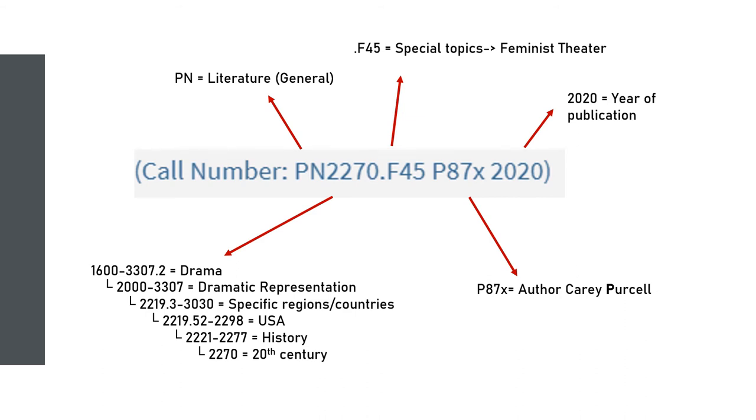To find the book on the shelf, you'd find the P section, then the PE range within that, then the 2270 range within that, and so on.